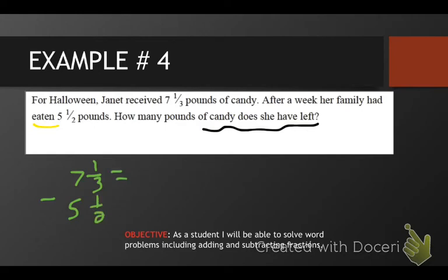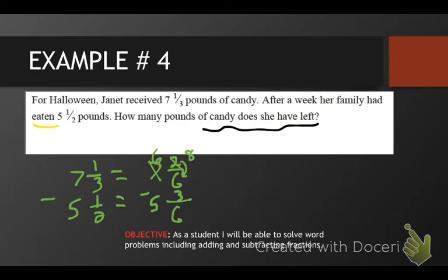We actually don't have a seven this time. The common denominator for three and two is six. We're going to have seven and something over six. Three times two is six, so one times two is two. We're going to subtract five — how does two become six? Multiply by three — one times three is three. Two-sixths minus three-sixths — unfortunately we need to borrow. We're going to take away from the seven, it becomes a six, and that two — remember we add the two and the six — which would give us eight. Now we can subtract: eight minus three is five over six, and six minus five is one. Our answer is one and five-sixths. Remember, we always need a label when we do word problems, and it says how many pounds — so our label is pounds.